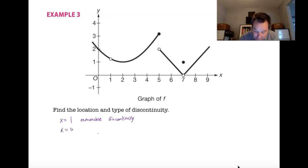At X equals 5. That's a jump discontinuity where the limits approach different things on either side of 5.